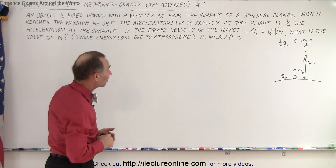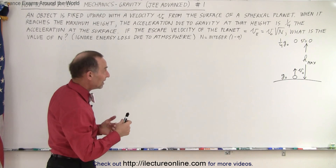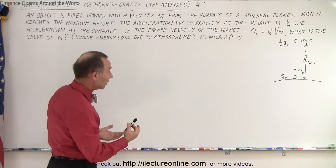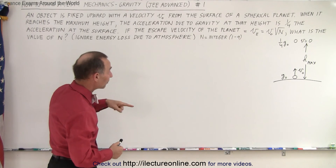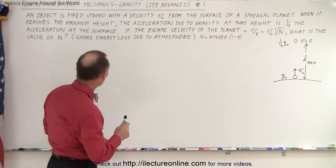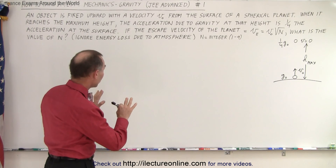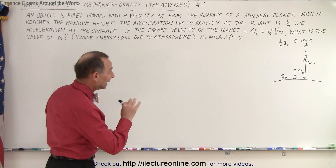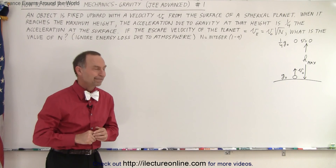If the escape velocity of the planet, v-sub-e, is equal to the initial velocity of the object times the square root of n, what is the value of n? We ignore any losses due to the atmosphere, and n is an integer between 1 and 9.